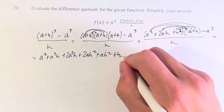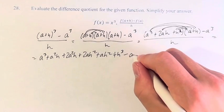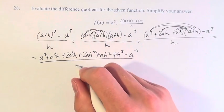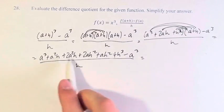Plus h cubed minus a cubed. This is over h. And now we have to simplify what's up here.